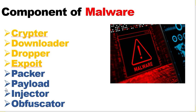The next component is the payload. The payload is the piece of software that allows control over a computer system after it has been executed. Once the exploit runs, this piece of code gives the attacker control over the target computer system so they can perform their actual intended attack.